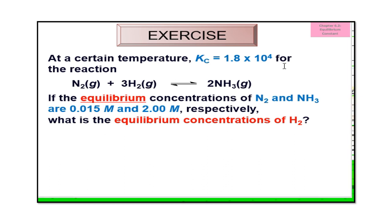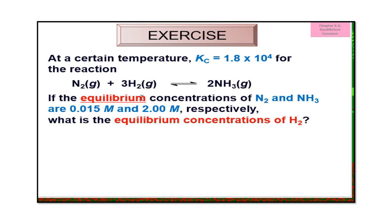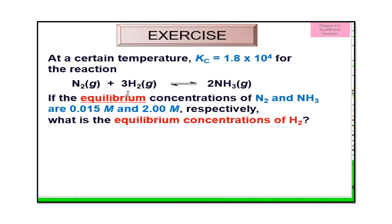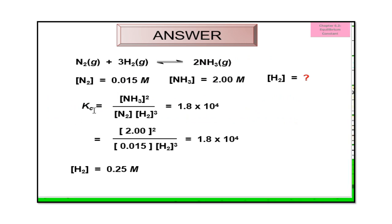In this case Kc is given. Check the equation — yes, it is balanced. Also make sure the system is at equilibrium before writing Kc. If the system is not at equilibrium, it is not Kc — it would be Qc or Qp. In this case it is at equilibrium.